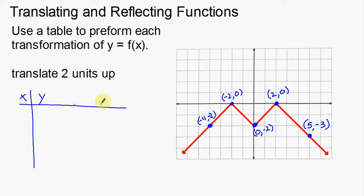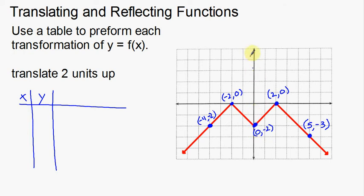I'm going to have an extra column. When I translate a function, either the x or the y coordinates are going to change. We're translating 2 units up, so if I'm taking everything and moving it up, that's going to affect the y coordinates. So we're going to take the y coordinates and add 2 to them to create a whole new set of points for graphing.